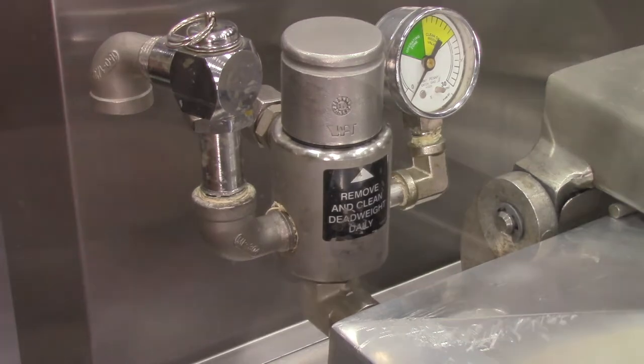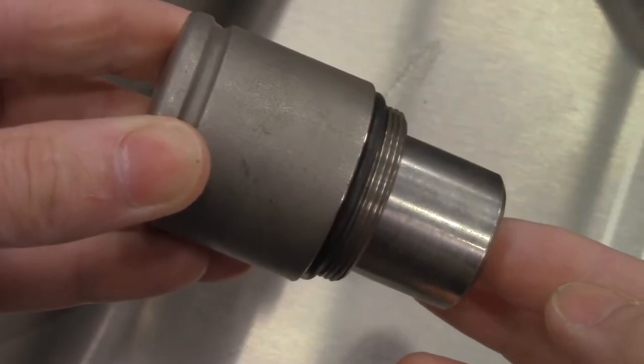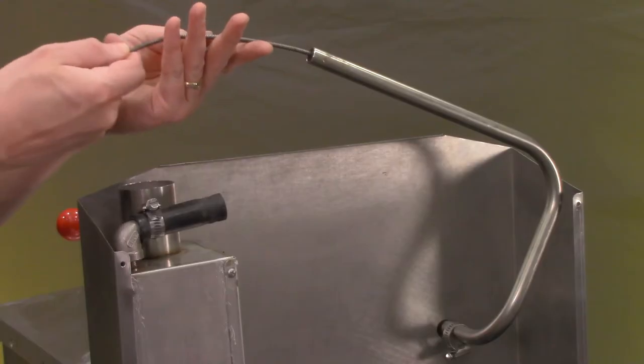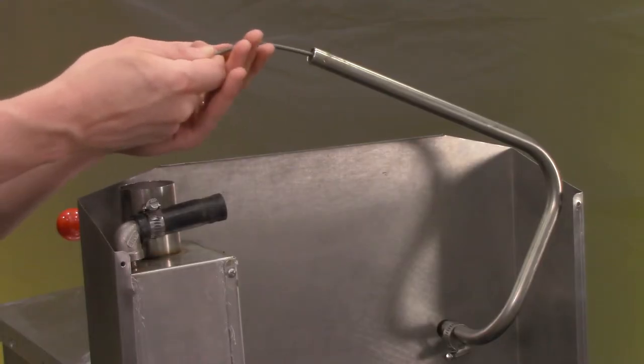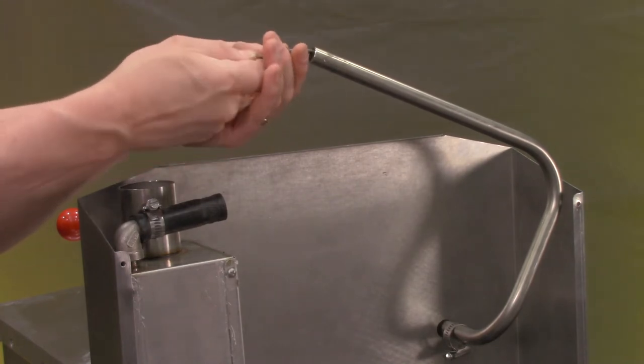Pressure too high issues are always caused by the deadweight side of the fryer. Either the deadweight is unable to lift due to oil accumulation in the deadweight assembly, or there is an obstruction somewhere in the plumbing from the deadweight valve to the steam exhaust stack.